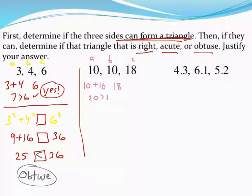10 and 10 make 20. 20 is, of course, bigger than 18. So, yeah, they can make a triangle. That's good. If we get a no at this point, again, just stop. You're done with the problem. If they don't make a triangle, then you don't need to figure out if it's right or obtuse. It doesn't make a triangle. Let's do our second test then. What kind of triangle is it now that we know it will make a triangle?